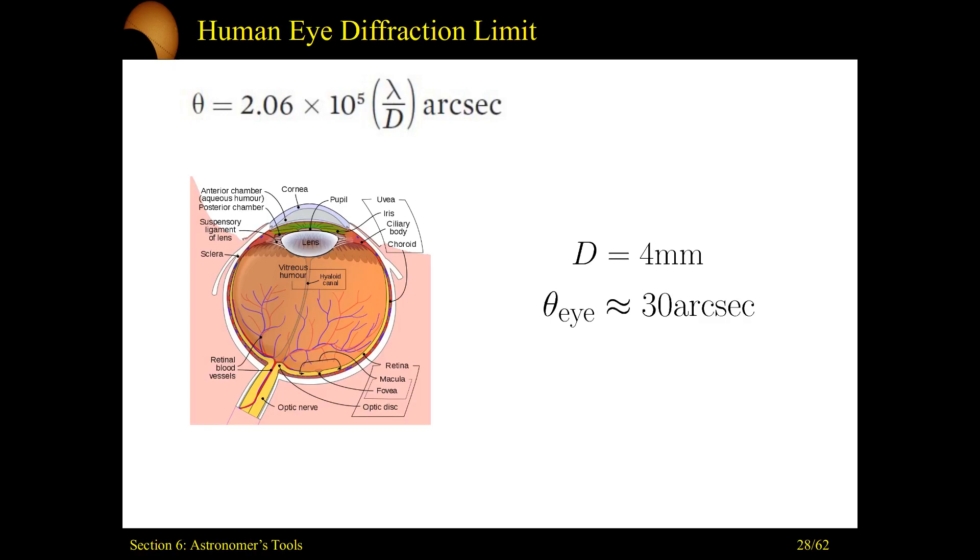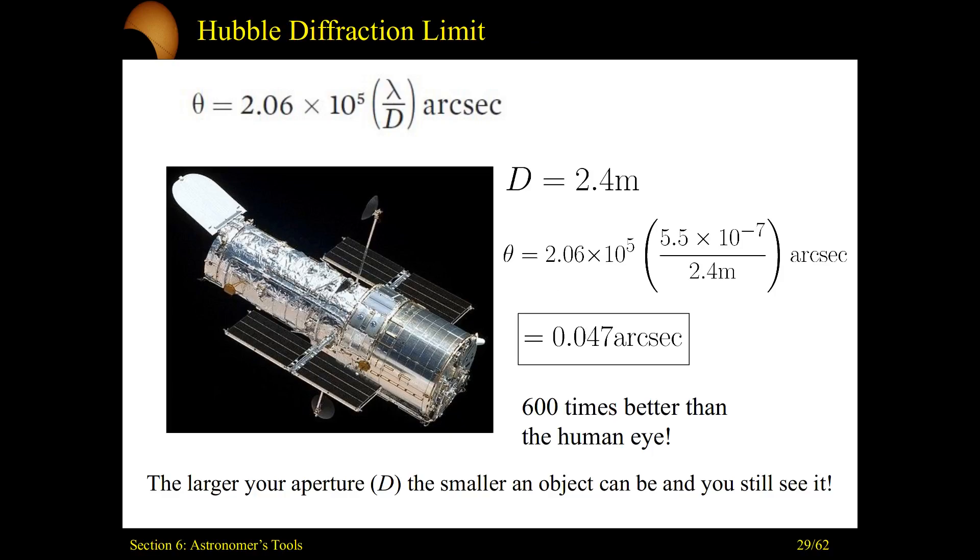So let's upgrade. Let's go to something like the Hubble telescope. A lot of the big, beautiful images that we've seen over the last few years in the universe have all come from Hubble, this wonderful device. Now, Hubble's aperture size isn't 4 millimeters. It's 2.4 meters. So with that, going back to our calculation, the resolution or the diffraction limit of Hubble is on the order of 0.047 arc seconds, which is about 600 times better than our eyeballs can see. And that's this recurring theme here. You get a bigger aperture, you'll be able to see smaller things. You'll be able to resolve more things in the universe.